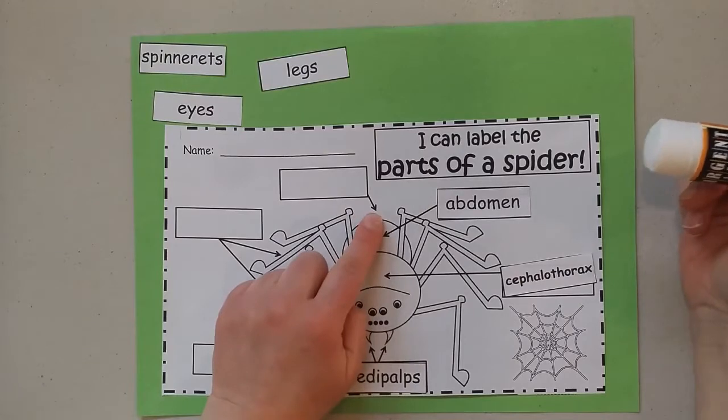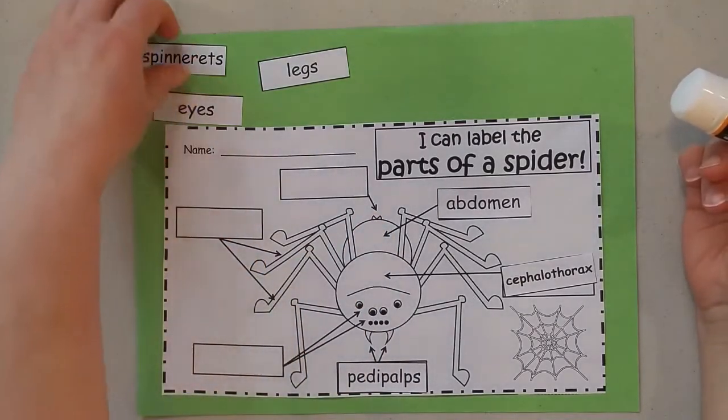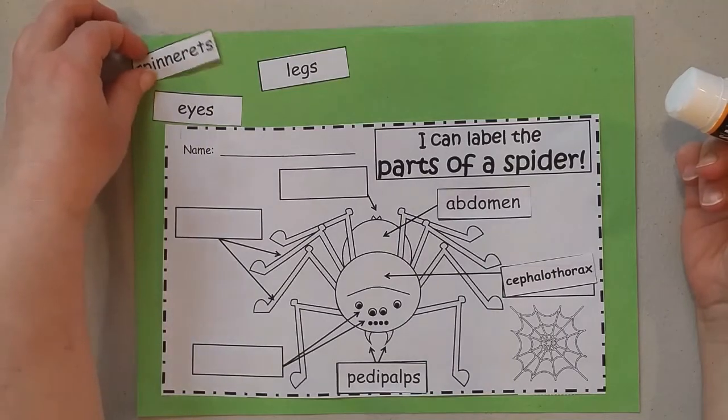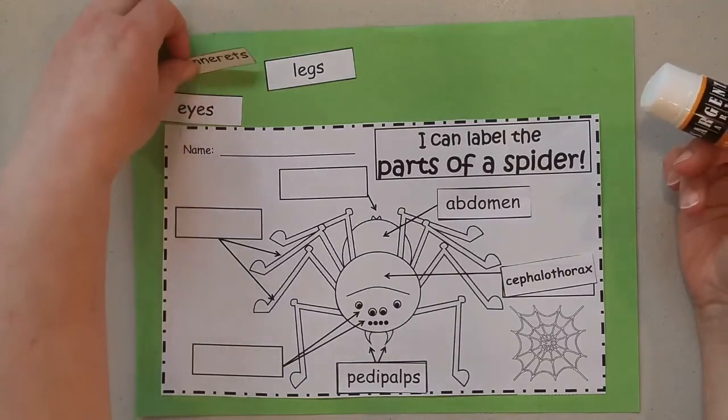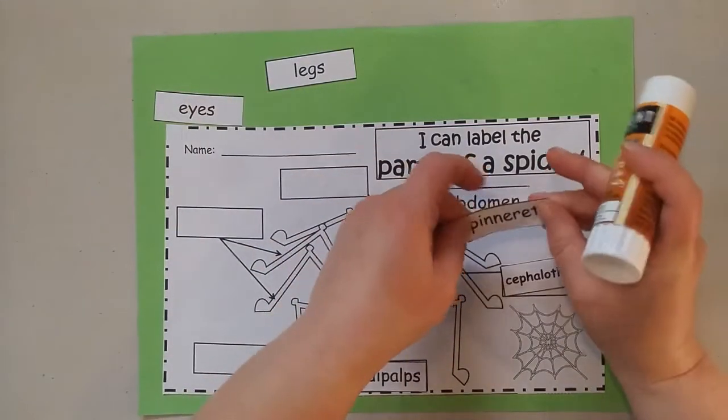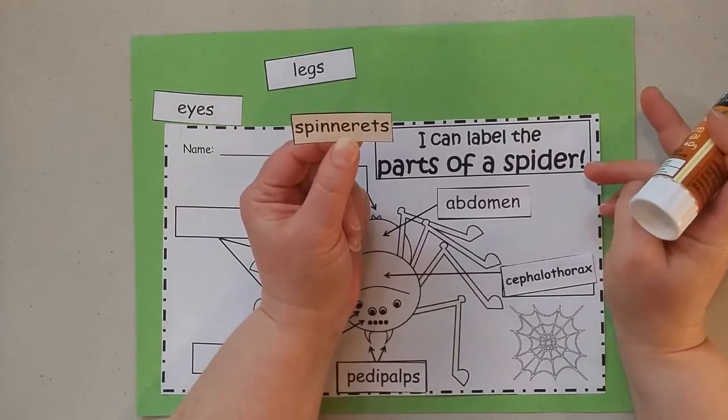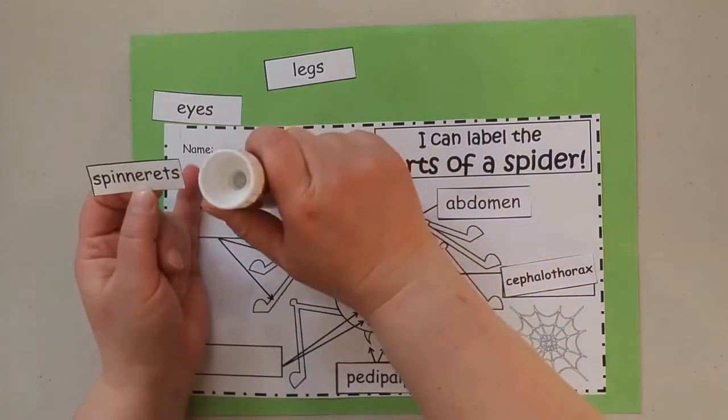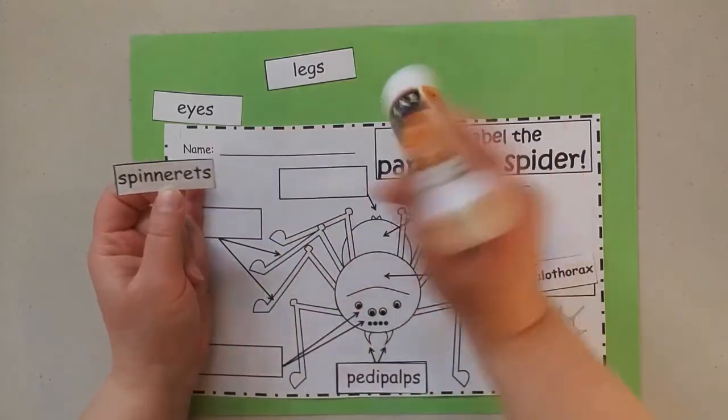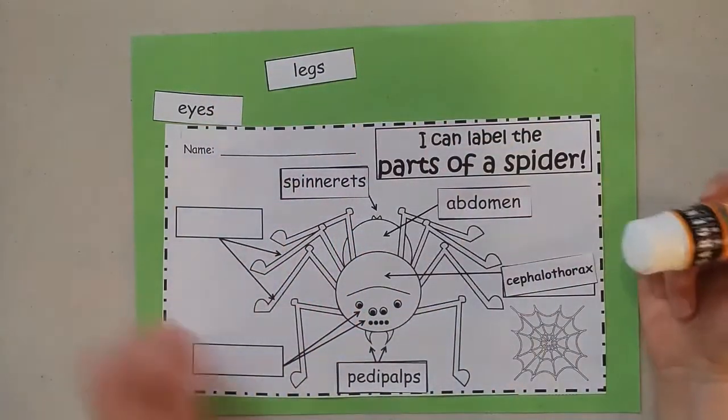Now at the very back of the spider is the part where the web comes out, and that part is called a spinneret. A spinneret. It starts with the letter S. So find the paper that starts with the S. It looks like this. Find this paper, put your glue down, and then stick the paper to it. Good.